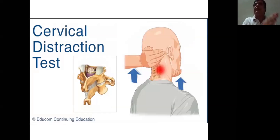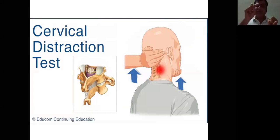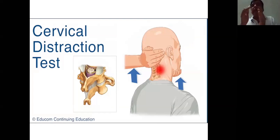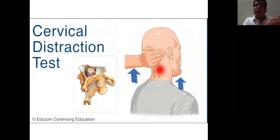So these two are the nerve root tension signs: first, the Spurling sign where you do extension and rotation of the neck; second, axial compression where you compress the head to increase the pain. Now the nerve root tension-relieving signs: the first is the cervical distraction test, which is the opposite of axial compression.